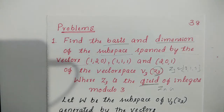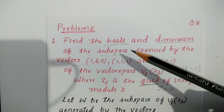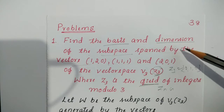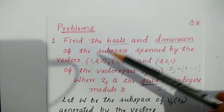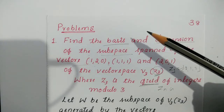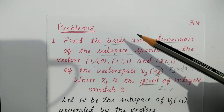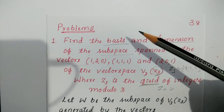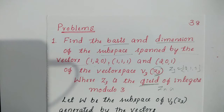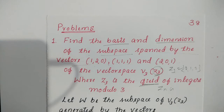If the question asks to find the basis and dimension of a subspace spanned by given vectors, just take those vectors in a matrix, then convert to row reduced echelon form. The final non-zero rows are nothing but a basis of that subspace, and the total number of non-zero rows is nothing but the dimension of that subspace.